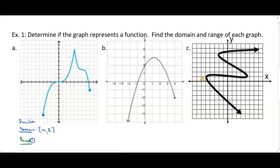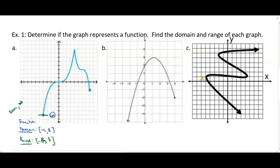For the range, we go bottom to top. The lowest y-value on this graph is negative 8 and it goes all the way up to positive 8 on the y-axis. So negative 8 is the lowest y-value and 8 is the highest, meaning every y-value in between negative 8 and 8 exists somewhere on this graph.